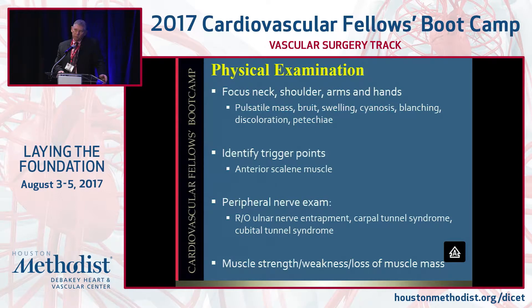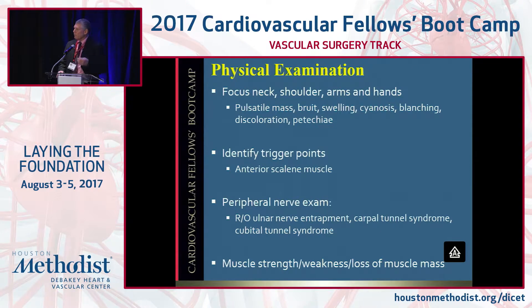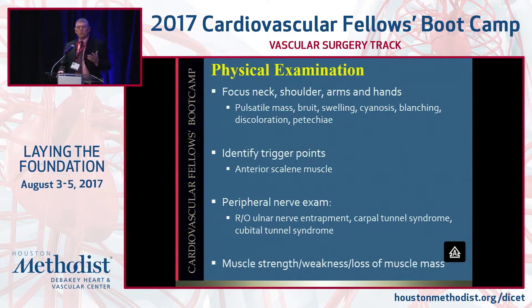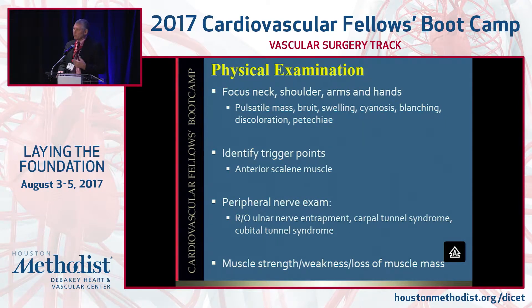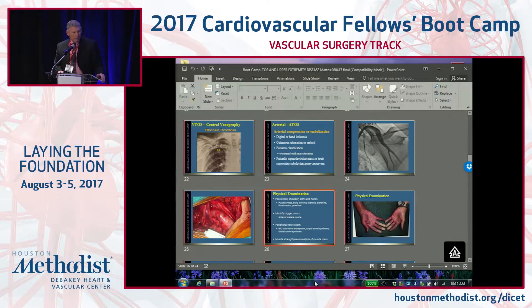On exam, what are you trying to look for? You want to focus on the neck, shoulder, arms, and hands — looking for a mass, looking for a bruit. Are they swollen? Do they have cyanosis? Are they blanching, discoloration, and petechia? Because you have to exclude Raynaud's, you have to exclude a cardiac embolus, you have to exclude all intrinsic obstructive pathologies. Find a trigger point, maybe, on their anterior scalene, or you can do it at Erb's Point, which is on the lateral border of the sternocleidomastoid muscle and above the clavicle.